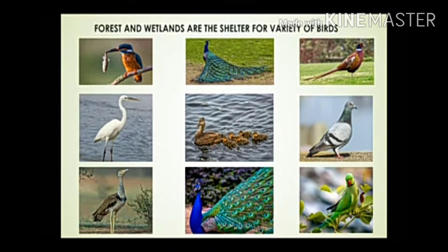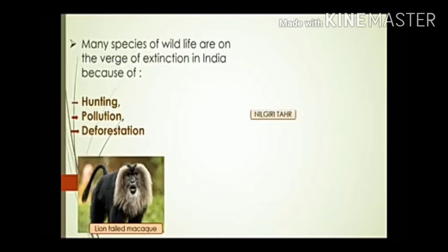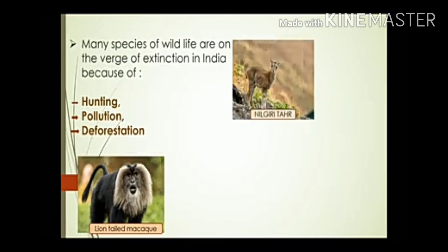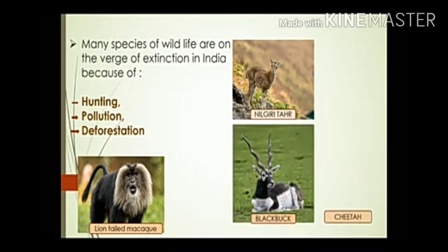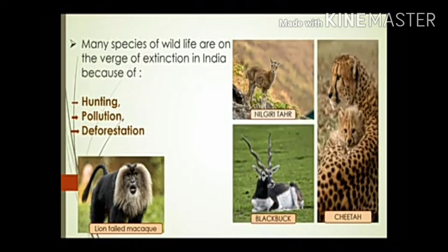In coastal areas, rivers, and estuaries, we can find turtles, gharials, and crocodiles. A variety of birds are found in forests and wetlands, including kingfisher, crane, Great Indian Bustard, peacock, duck, pheasant, pigeon, and parrots. All these species make our land a unique habitat of wildlife.